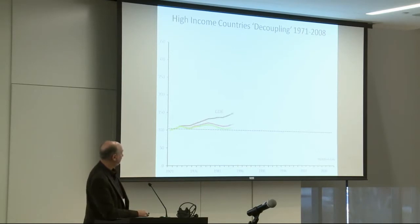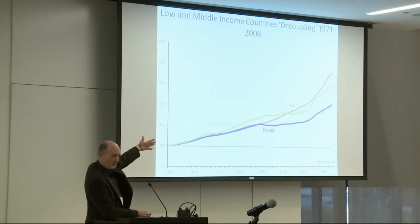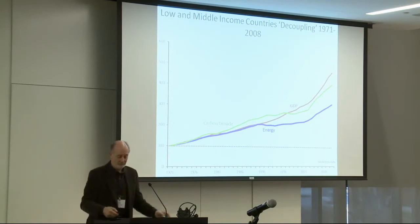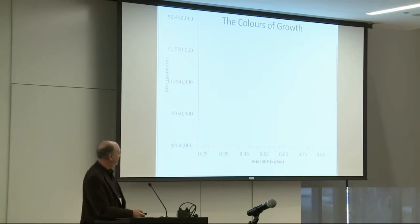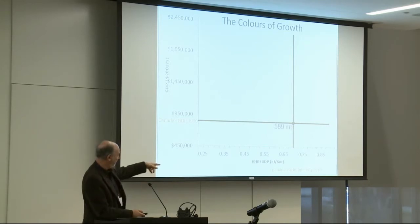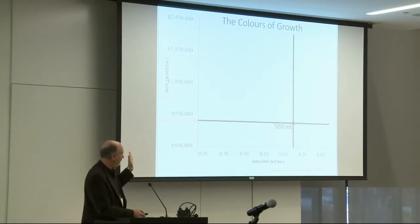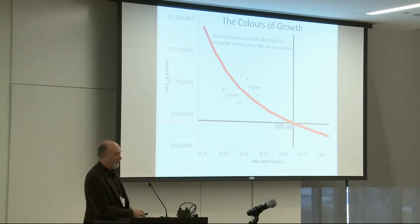Here's high-income countries, and here's low- and middle-income countries with a different scale — it's actually even more pronounced. I found the following graphic useful: intensity — greenhouse gases per unit of GDP on the horizontal axis, and GDP on the vertical axis. This is data for Canada. There was our GDP in 1990, the base year for Kyoto, and our greenhouse gas intensity for the same year. You multiply the two together and get total output of greenhouse gases, which you could achieve from a larger economy and a more efficient one, or a smaller economy and a less efficient one.